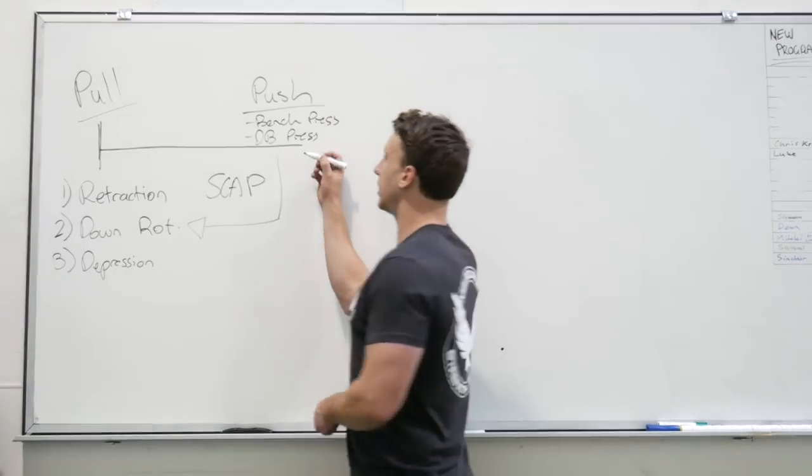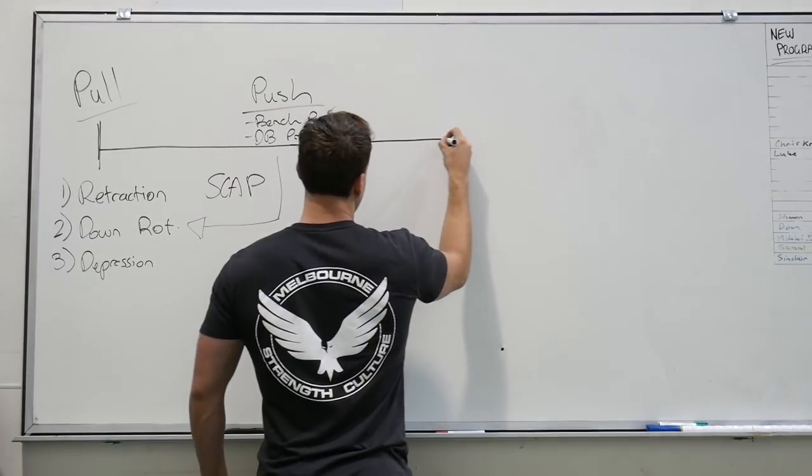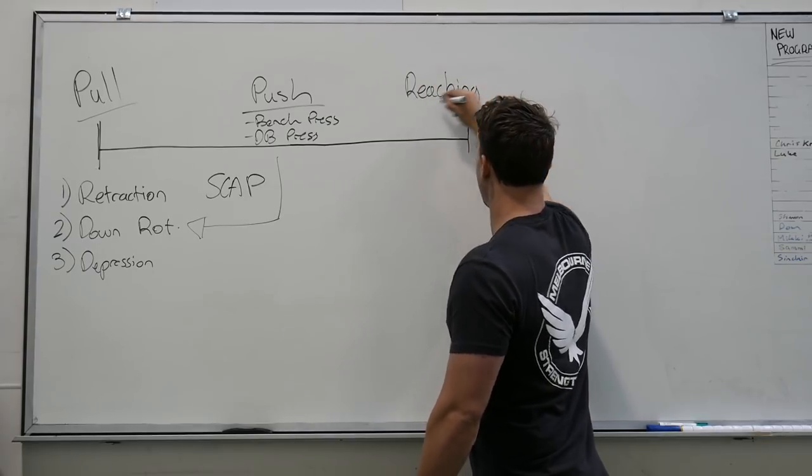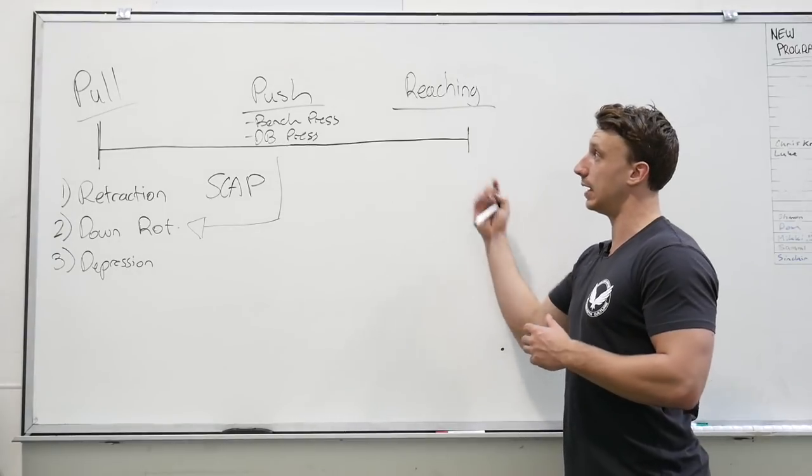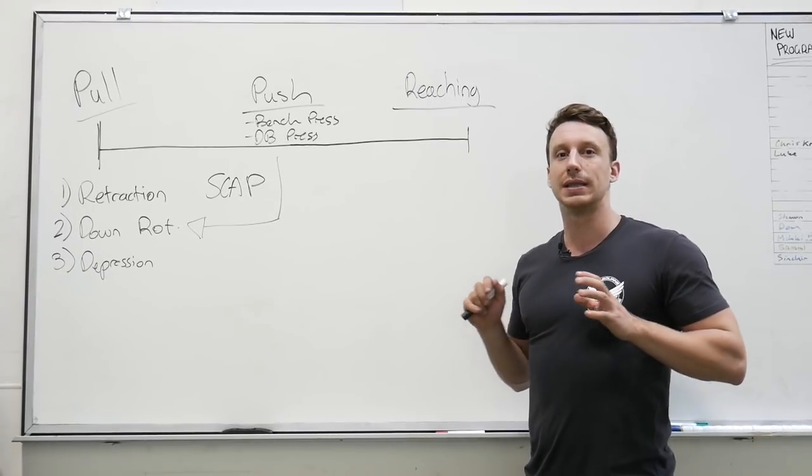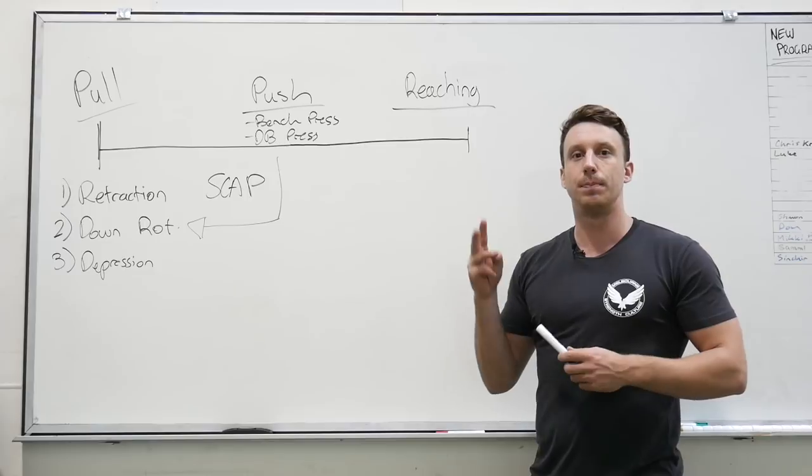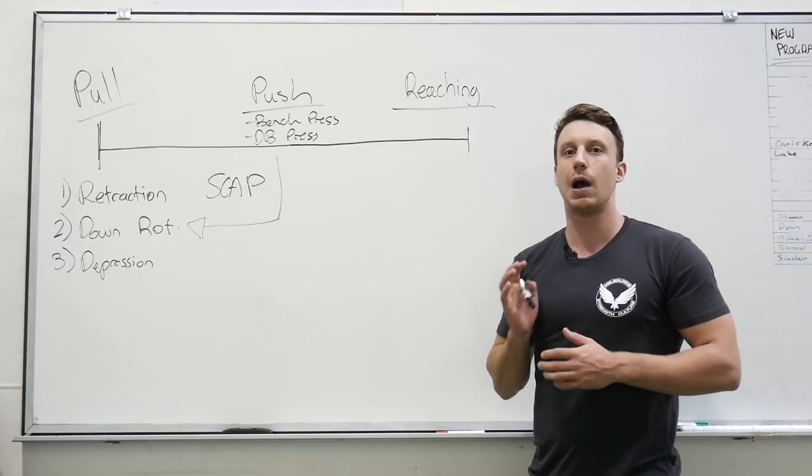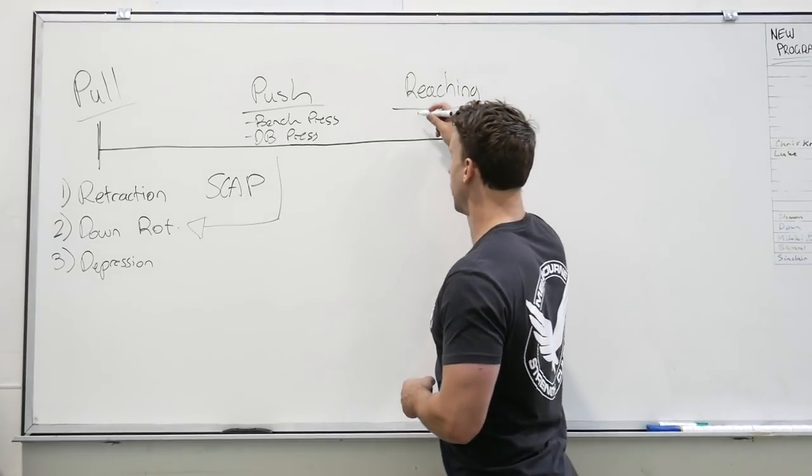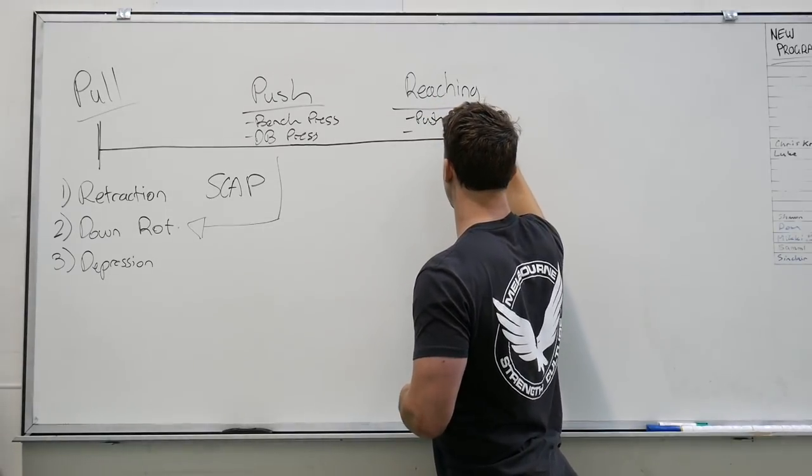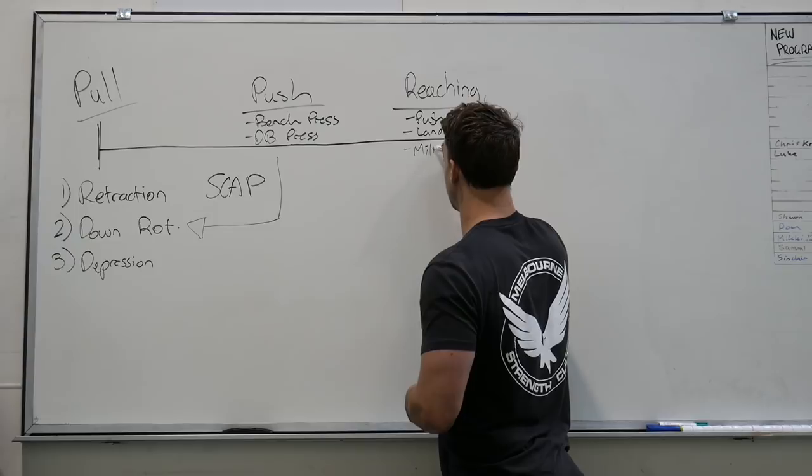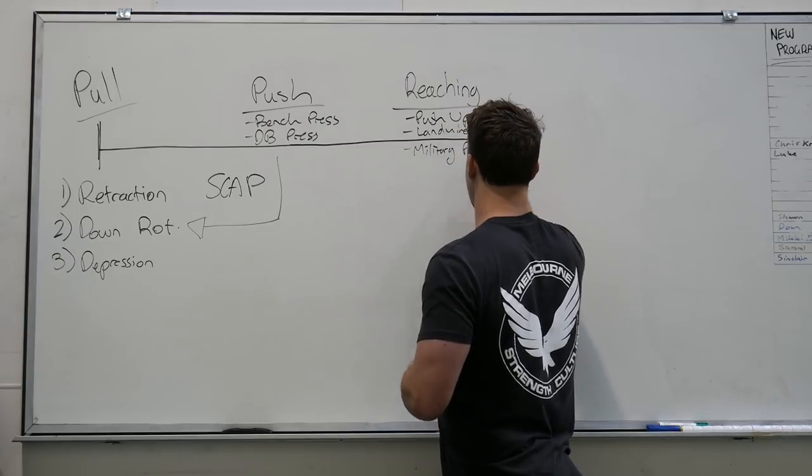We're going to continue our movement continuum and now enter the realm of reaching, and this is quite often a missed step in strength training programming. Our reaching exercises are any pushing movements where we allow the shoulder blades to move through a full range of motion. The big two that we use here at Melbourne Strength Culture are push-ups and landmine press, however any military press or overhead pressing would also be classified in this category. So we have push-ups, landmine press, and military press movements and all of their variations.